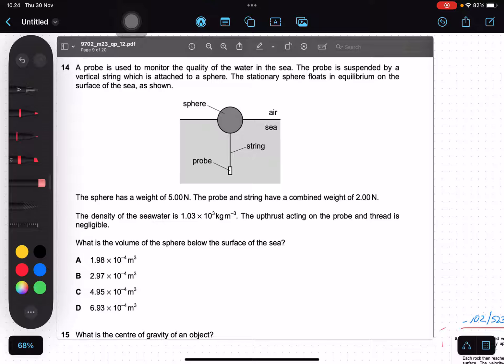A probe is used to monitor the quality of water in the sea. The probe is suspended by vertical string which is attached to the sphere. The stationary sphere floats in equilibrium on the surface. The sphere has weight 5.0 N. The probe and string has combined weight 2.0 N. The density of seawater is 1.03 times 10 to the power 3 kg m minus 3. The upthrust acting on the probe and the thread is negligible.